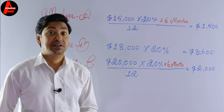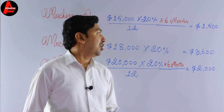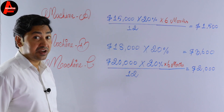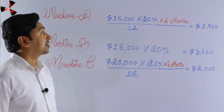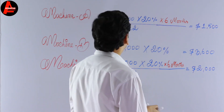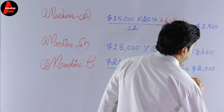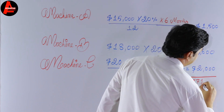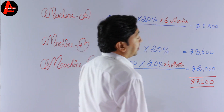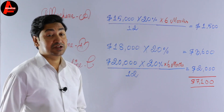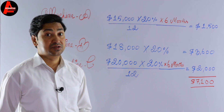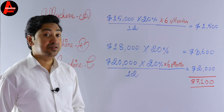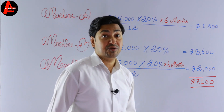This is how we calculate depreciation when there are multiple assets on the question. Adding all three amounts together: $1,500 + $3,600 + $2,000 = $7,100. This is the total depreciation the business must charge for the year ended 31st December 2017.